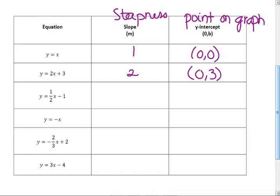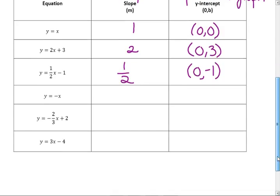Slope measures the steepness. They're not related at all, but they have x's and y's in them — that's their relationship. What's the slope? It's 1 half. And your y-intercept would be 0, negative 1. It's going to be the y-coordinate, but the x-coordinate is always 0. Hence the reason for making you write it as an ordered pair.